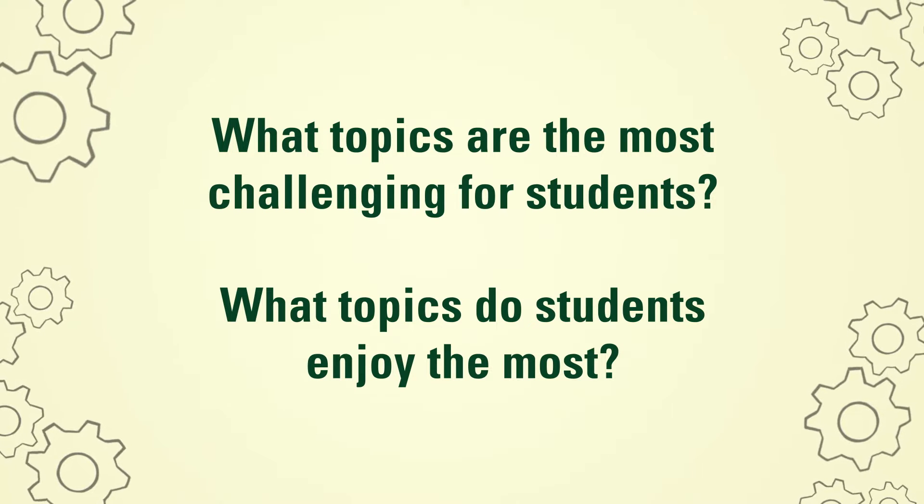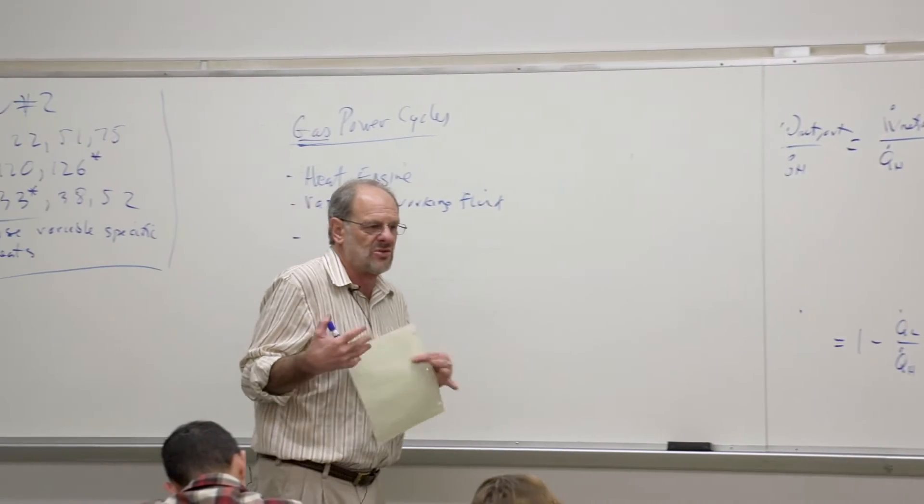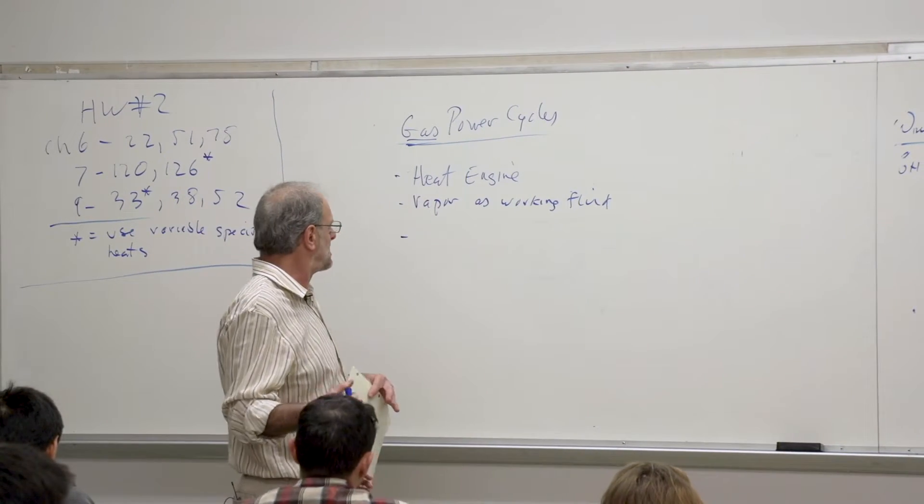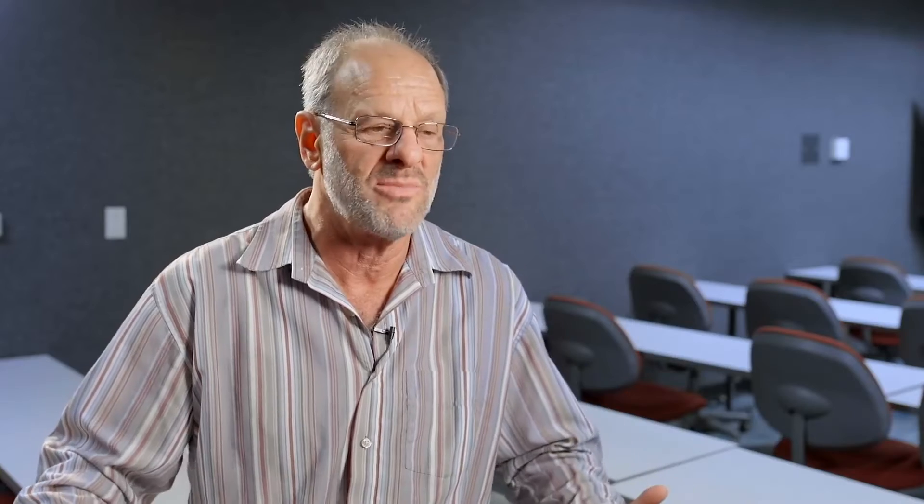I think with regards to most challenging, I would have to say anything dealing with entropy. Entropy is a thermodynamic property that we use to determine whether a particular process is possible or not. It's not obvious like energy or temperature or pressure—people can make good sense of those. But entropy is a measure of randomness or disorder. And that just causes a lot of students grief, just trying to understand the basic concepts.